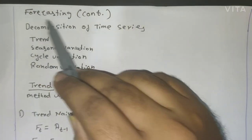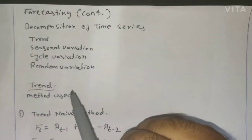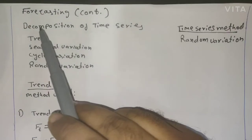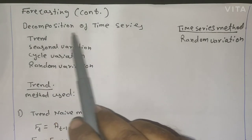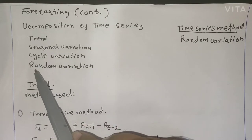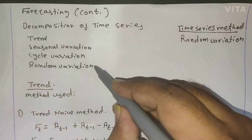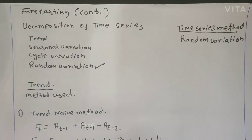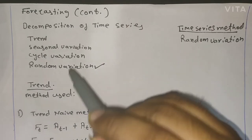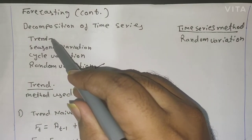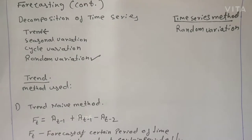Let us continue with forecasting. As we saw in our last video, after we decompose the time series method, we have many types of variations. We completed random variation in our last video, so today we will see trend variation.